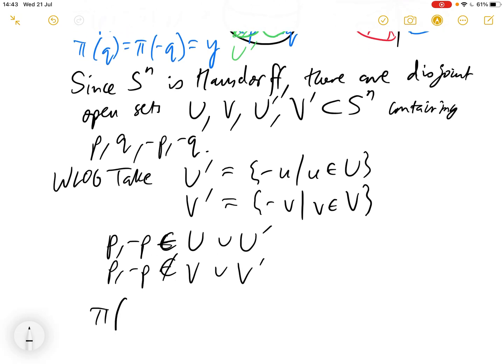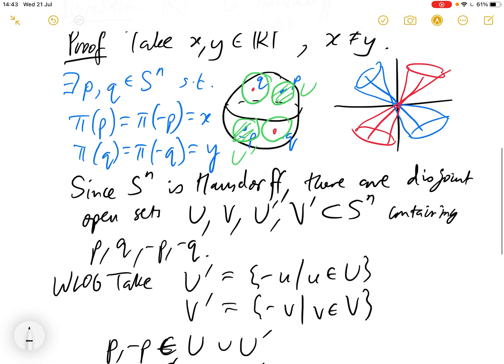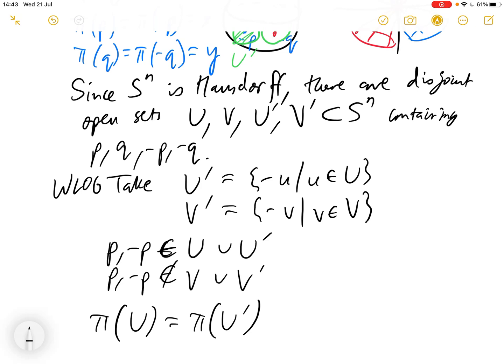And we know that pi of U is the same as pi of U', and this is because both P and minus P map to the same point, and it's also because we're taking U' to be a mirror image of U, and also pi of V is the same as pi of V'.